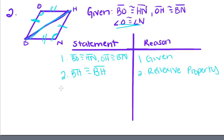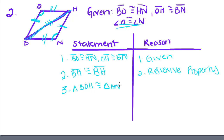We can say the triangles are congruent by side-side-side, because we have three pairs of congruent sides. So triangle BOH is congruent to triangle HNB by side-side-side.